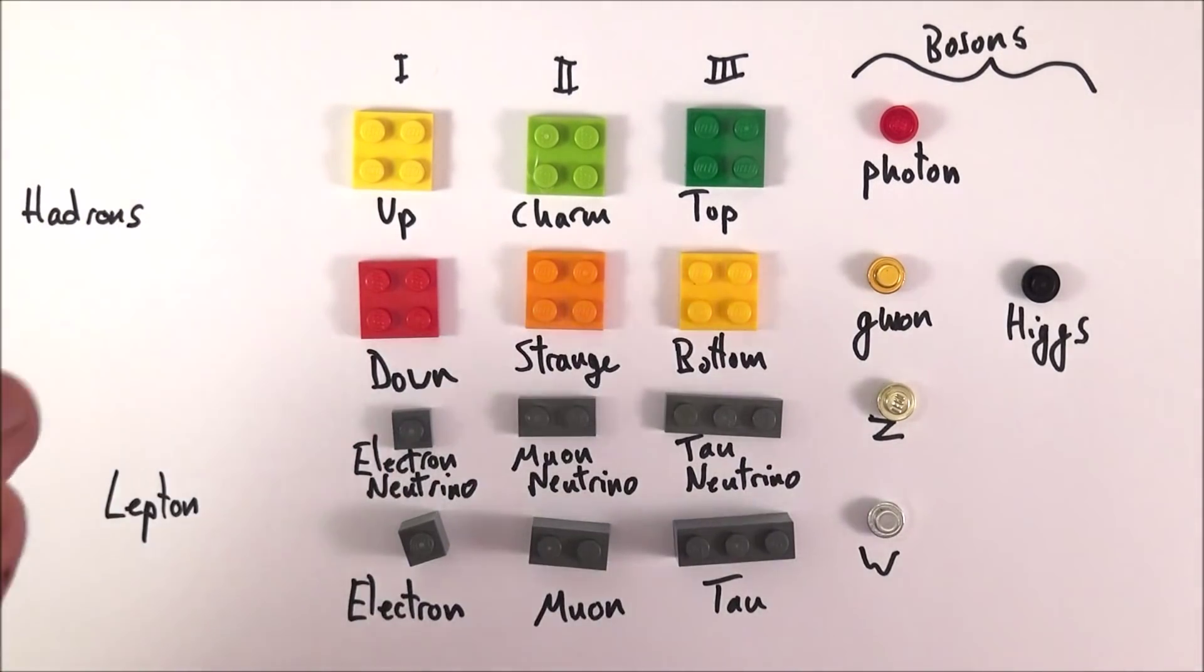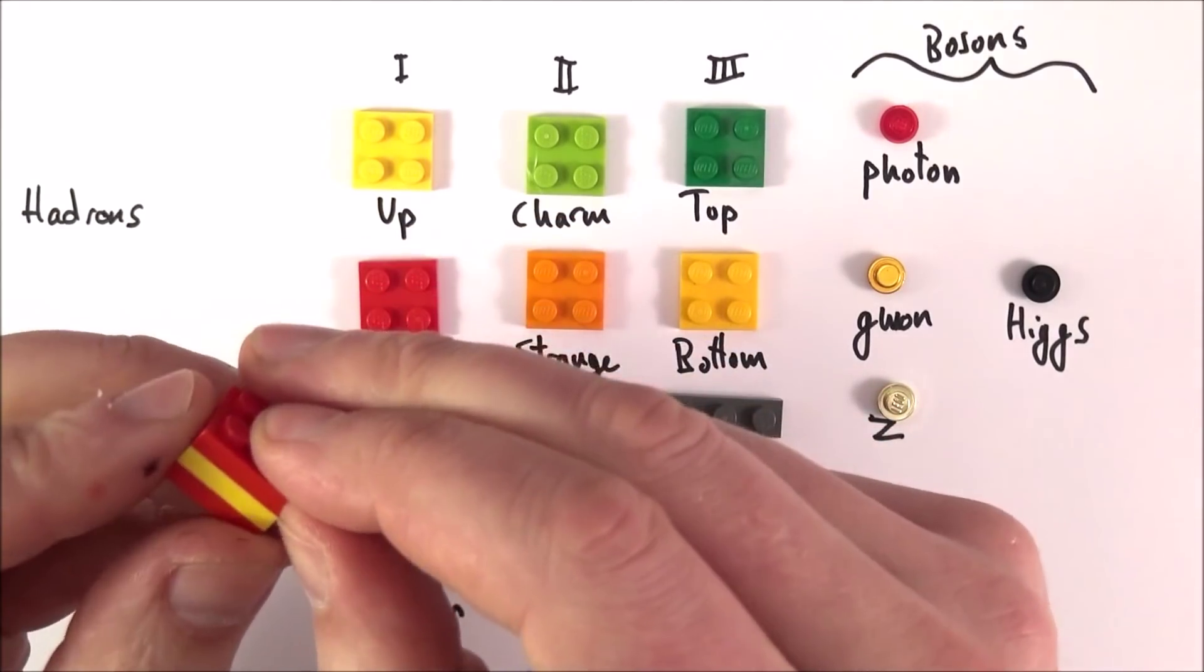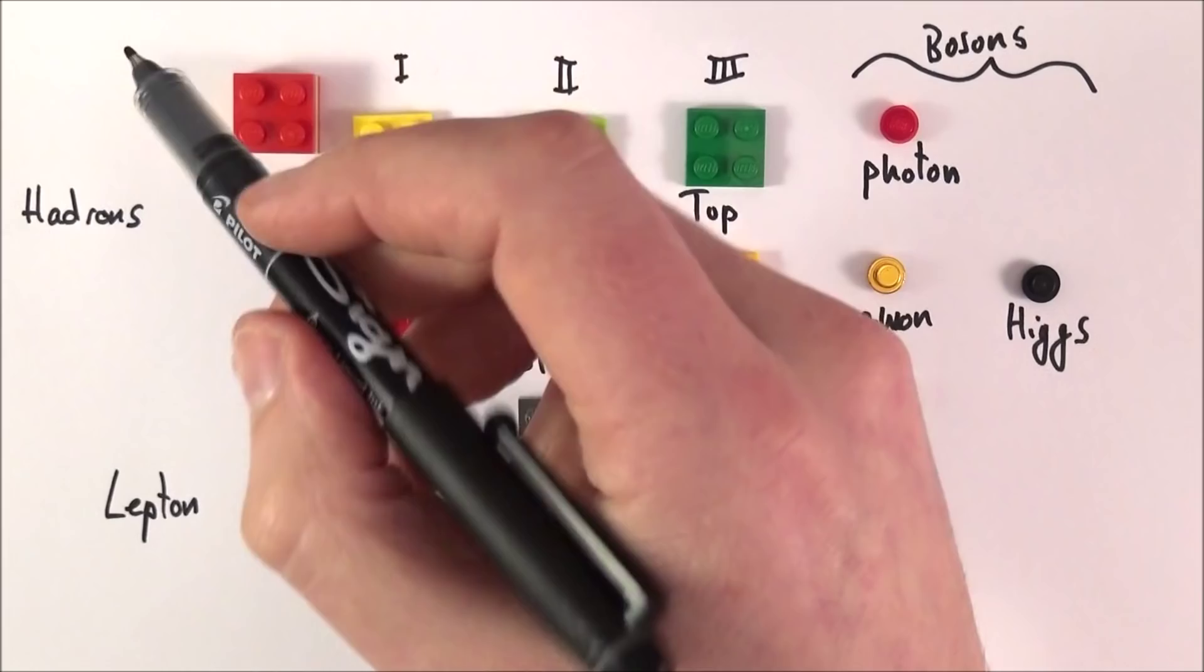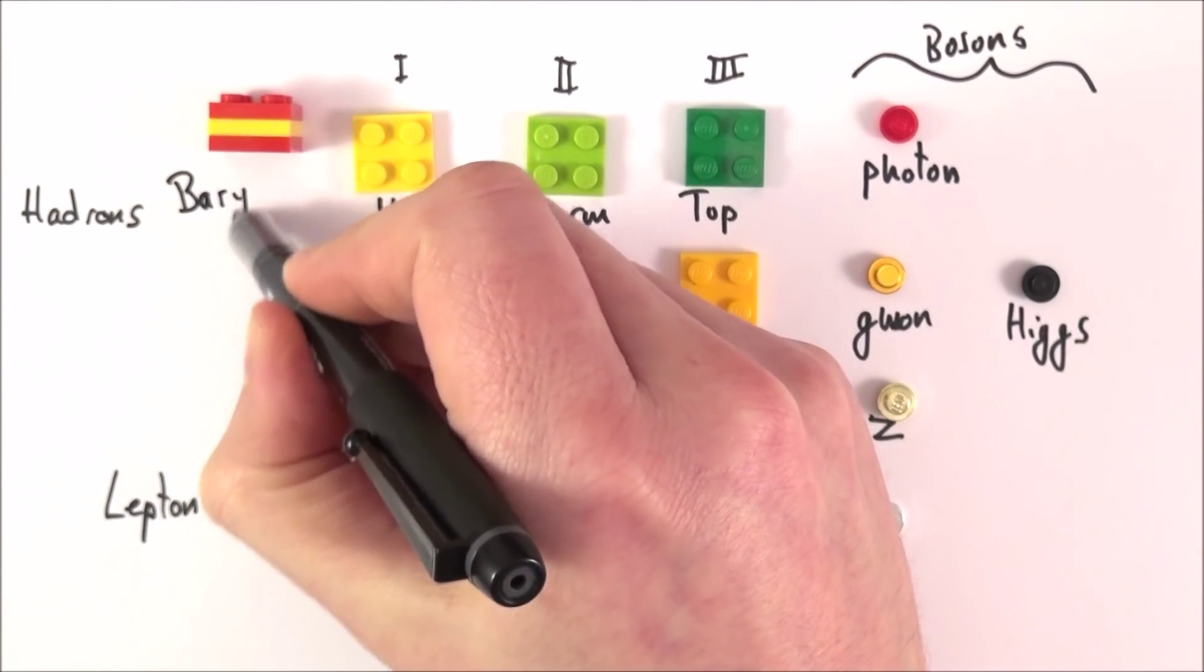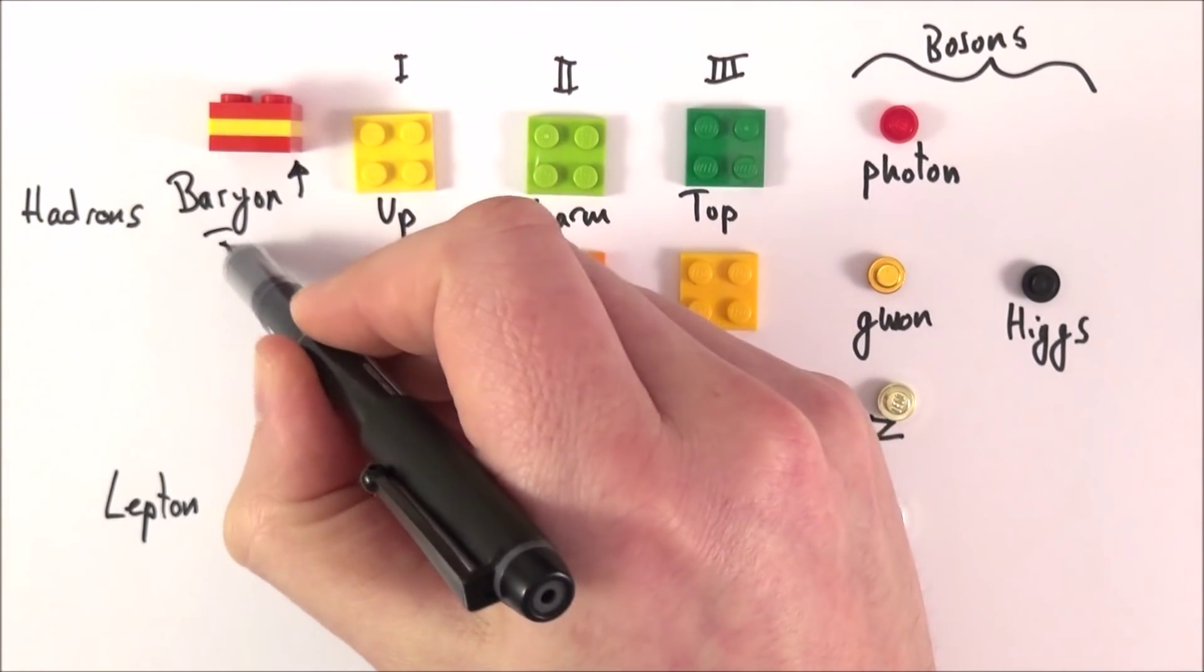There are basically two sorts of hadrons. Some hadrons are made out of three quarks. For example, if you have a neutron, it's made out of three quarks, and this is what we call a baryon.